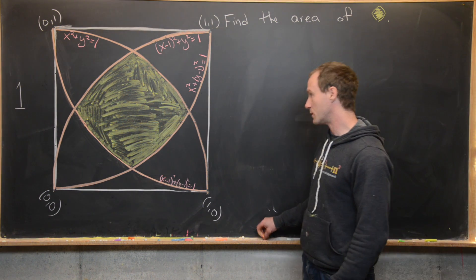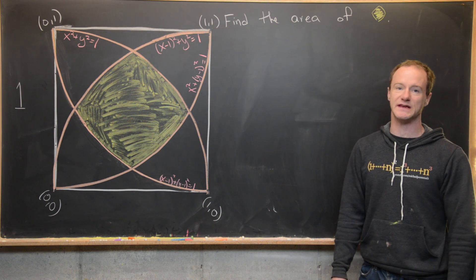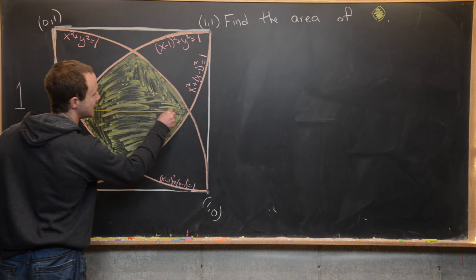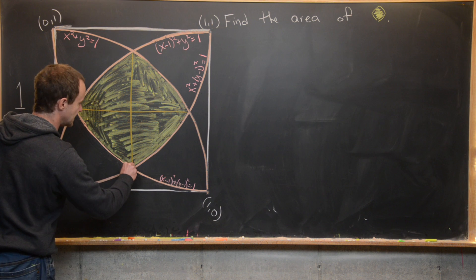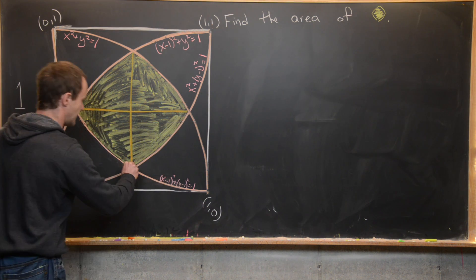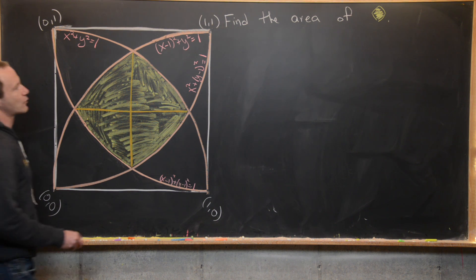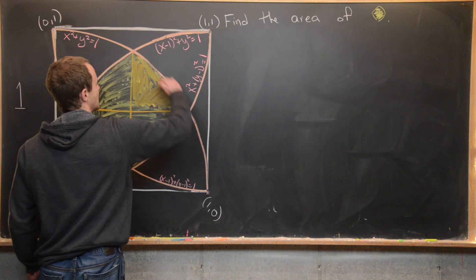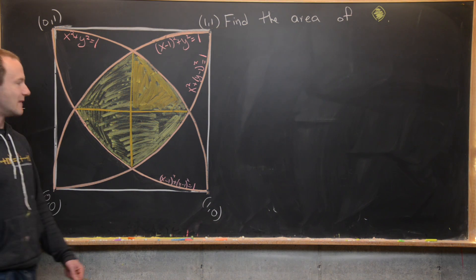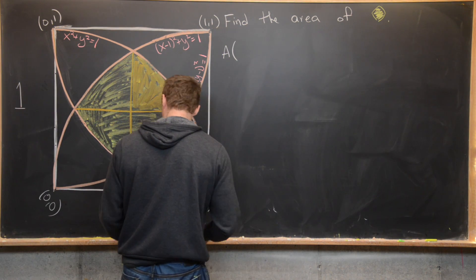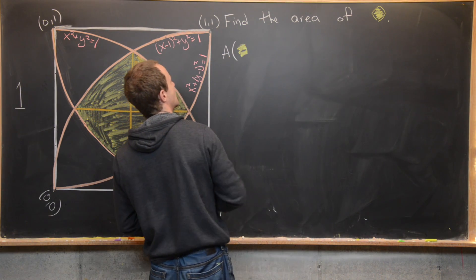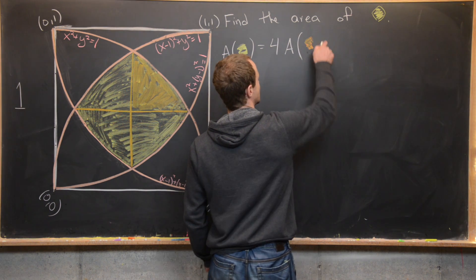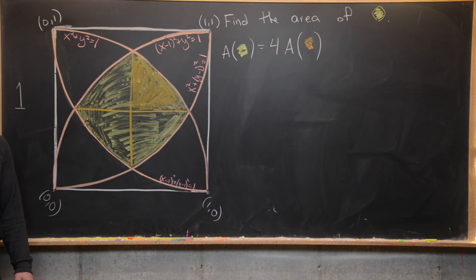Next, we split this region into four equal pieces using two orange lines. By symmetry these four pieces have equal area, so our goal becomes finding the area of one orange piece and multiplying by four.